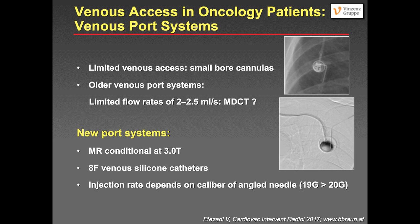For several years now, we have had newer power port systems. Most of these are MR-conditional even at 3 Tesla, have thicker venous silicone catheters with a caliber of 8 French, and allow higher flow rates. Here you see an X-ray of a modern power port system — it even says CT, confirming it is approved for high-flow injection. You need to use angled needles, and with a larger caliber 19-gauge needle, you can achieve a higher flow rate.